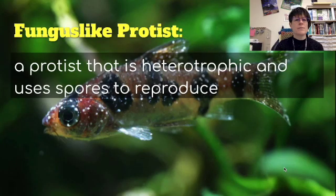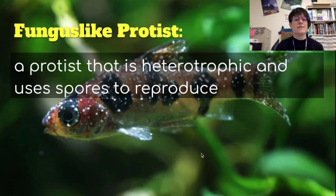Fungus-like protists are protists that are heterotrophic and use spores to reproduce. In the background here we see a fish with ick on it. Ick is a fungus-like protist that is a parasite on fish.